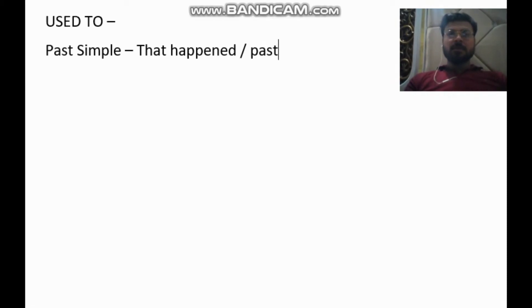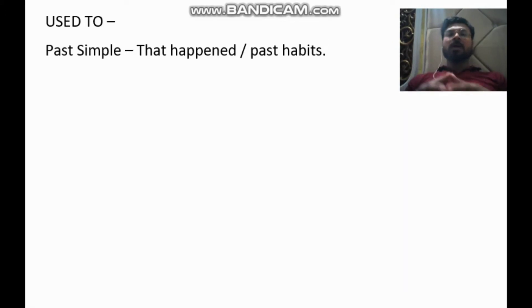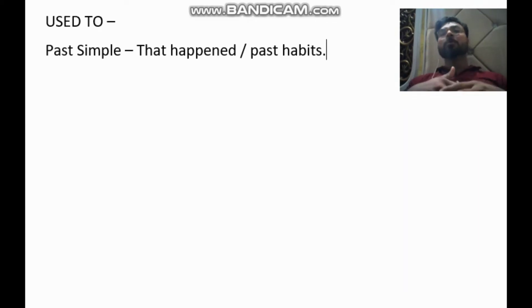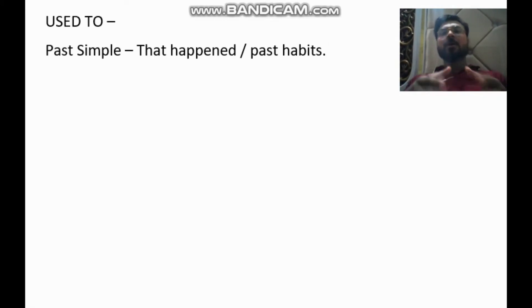Before we go to 'used to', let's talk about past simple tense first — where do we use it. We use past simple tense when we talk about things that happened once, like: 'Yesterday I went to the market.' We also use it to talk about past habits — something that happened habitually, more than one time. For example: 'I smoked when I was 17' means smoking was my habit at that time.